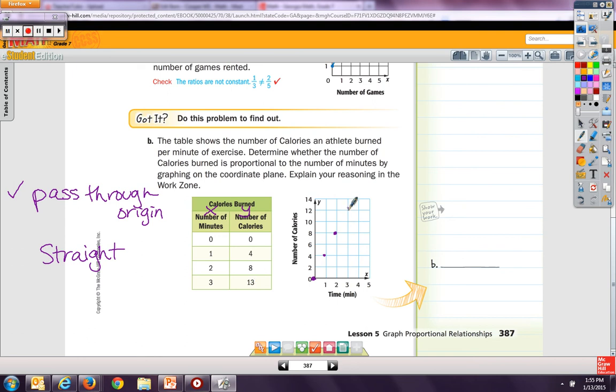That comes up here. So my line doesn't quite go straight. It goes a little crooked. It's close to straight, but it's not quite straight. So it's not straight. So it is not proportional.